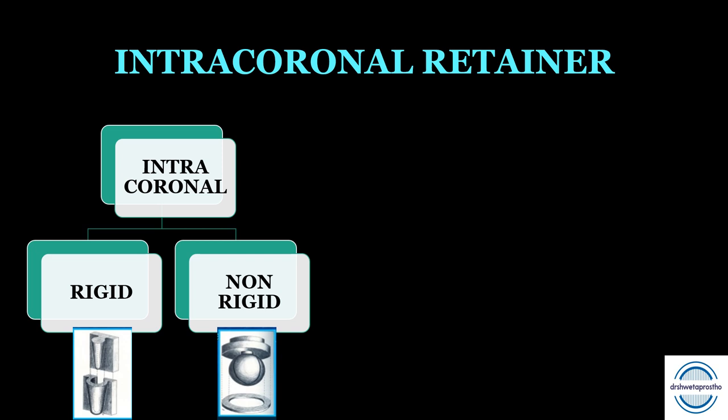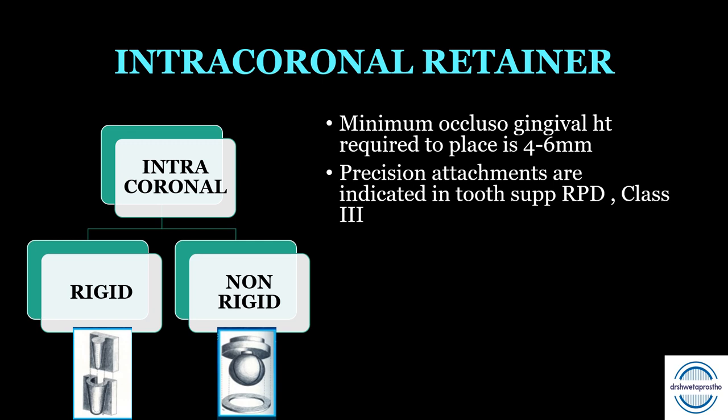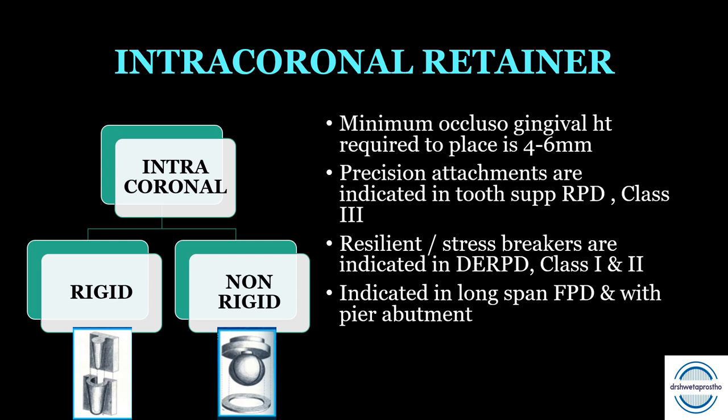Intracoronal retainers can be classified based on stiffness as rigid (no movement allowed) or non-rigid/resilient (allow some movement between abutment and prosthesis, applying less torquing forces). Requirements: minimum occlusogingival height of abutment should be 4-6 mm. Precision attachments are indicated in tooth-supported arches (Class 3) — primarily for aesthetics. If the word 'resilient' or 'stress-breaker' is mentioned, they are indicated in distal extension RPDs (Class 1 and 2). Also indicated in long-span FPDs, cases with pier abutments, and over-dentures.